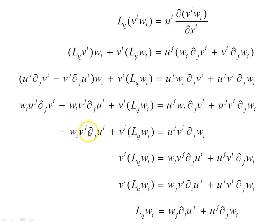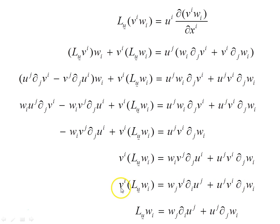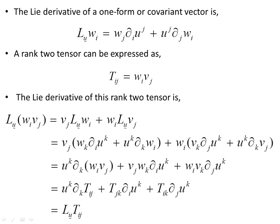After swapping the dummy indices i and j, we can divide through and cancel, and we're left with the Lie derivative of a one-form, or covector. A rank-2 tensor can be expressed as an outer product of two components, covariant in both indices. So the Lie derivative of this rank-2 covariant tensor is found by applying the product rule, and when expanded out gives the full expression.